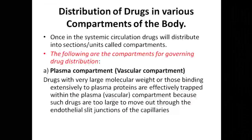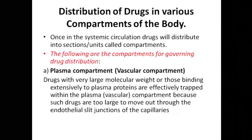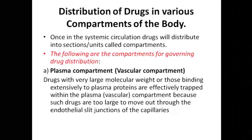We are going to start with distribution of drugs in various compartments of the body. Once in the systemic circulation, drugs redistribute into distinct body compartments. The first compartment is the plasma compartment, sometimes called the vascular compartment. Drugs with a very large molecular weight or those binding extensively to plasma protein are effectively trapped within the plasma vascular compartment because such drugs are too large to move out through the endothelial slit junction of the capillaries.